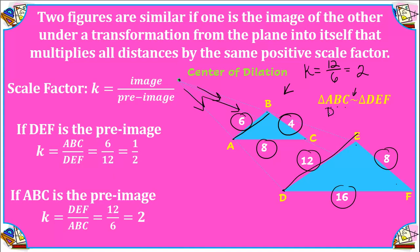Similarity means that they are the same shape but a different size. I like to create a vertical alignment of my similarity statement so I can see that AB corresponds to DE, BC corresponds to EF, and side AC corresponds to DF. You can also identify corresponding angles: angle A and angle D are corresponding, B and E correspond, and C and F correspond.